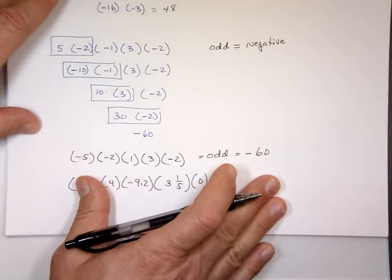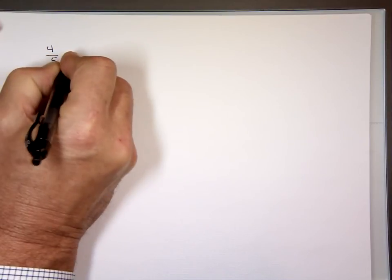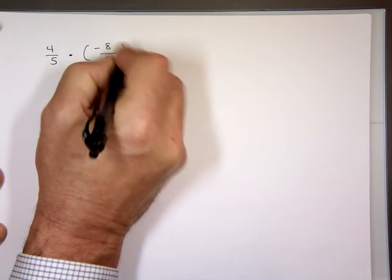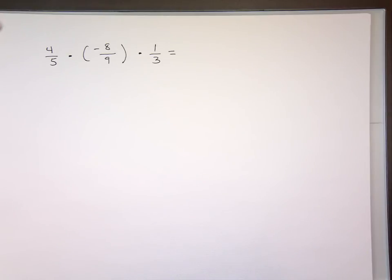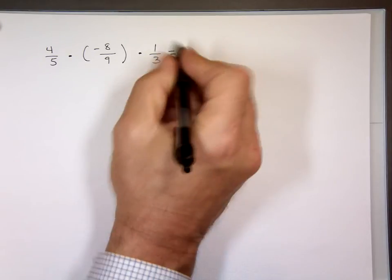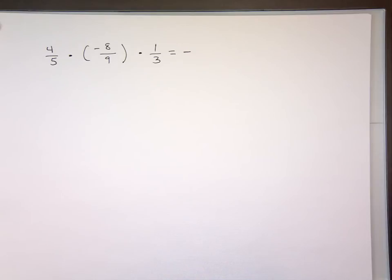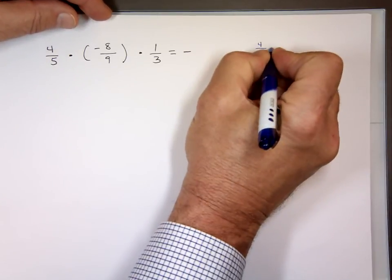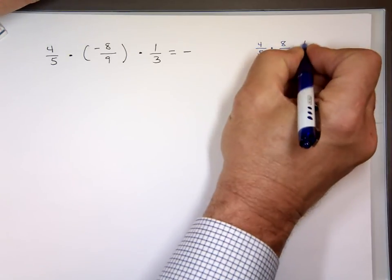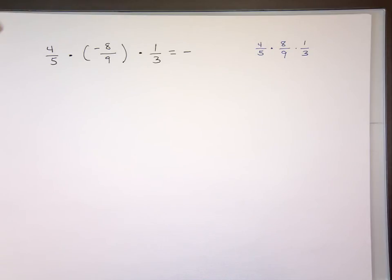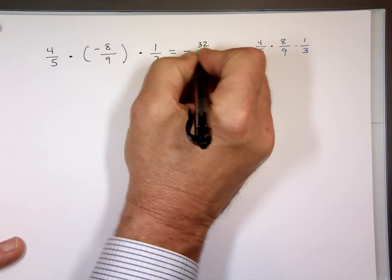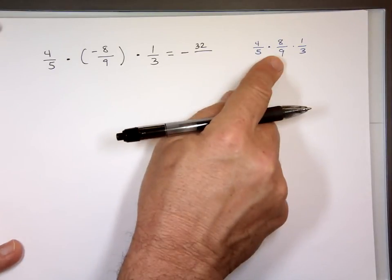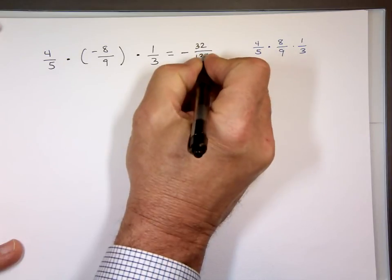Let's try another example: four over five times negative eight over nine times one over three. Again, positive or negative? How many negative numbers do we have? One — that's odd, so it's negative. Let's go to the side and multiply the absolute values: four over five times eight over nine times one over three. Can I simplify anything? No. Four times eight is thirty-two. Five times nine is forty-five, times three is one hundred thirty-five. So the answer is negative thirty-two over one hundred thirty-five.